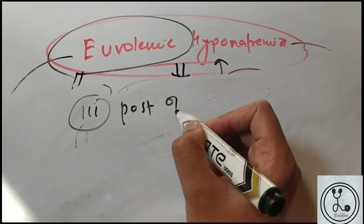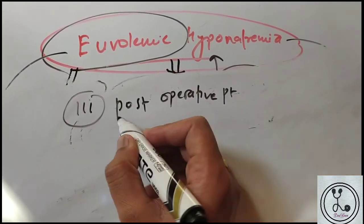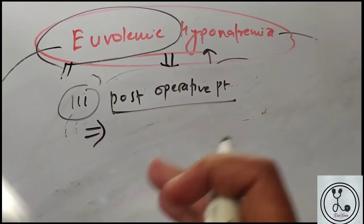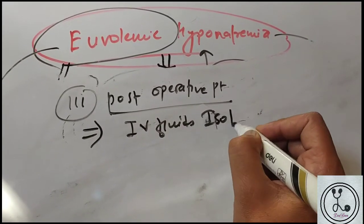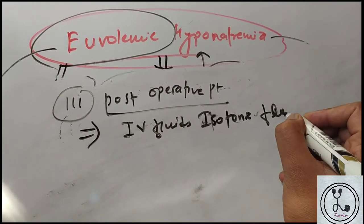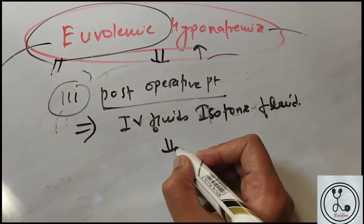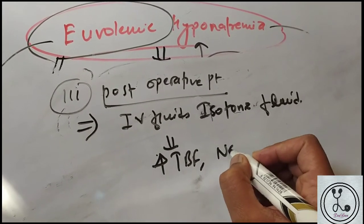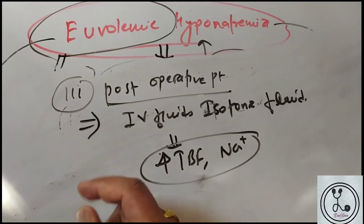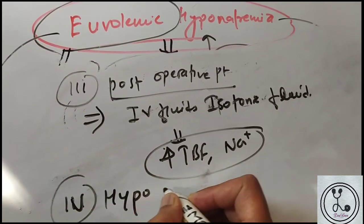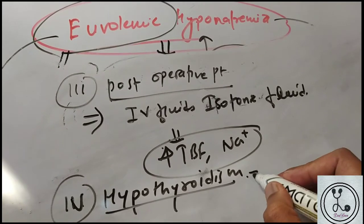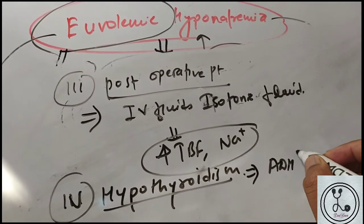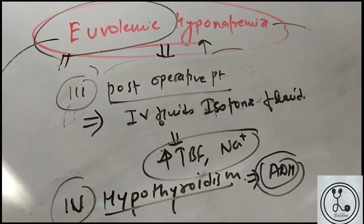Other causes of euvolemic hyponatremia include postoperative patients continuously given isotonic IV fluids, and hypothyroidism. In hypothyroidism, the exact mechanism is unclear but it is thought to relate to increased ADH levels, ultimately causing hyponatremia.